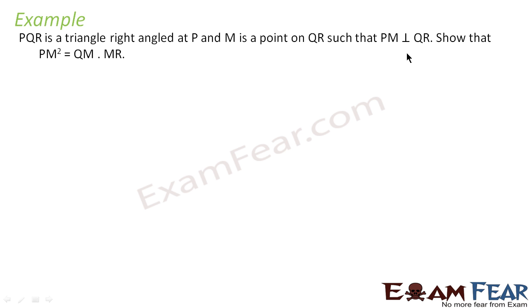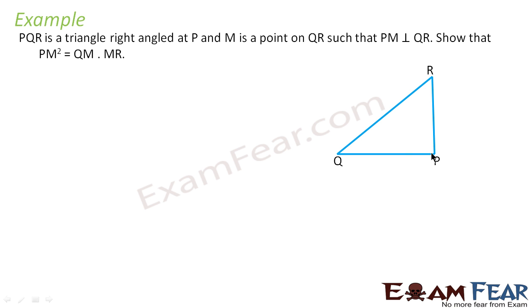PQR is a right triangle at P. M is a point on QR such that PM is perpendicular to QR. Let's draw it first. This is triangle PQR, and M is a point on QR such that PM is perpendicular to QR. Let's draw the perpendicular PM to QR — this is point M. So our diagram is complete.